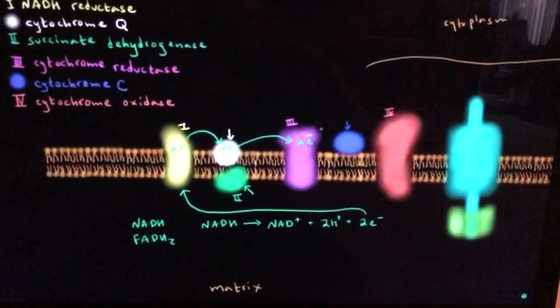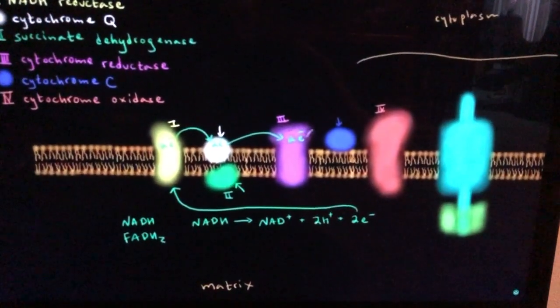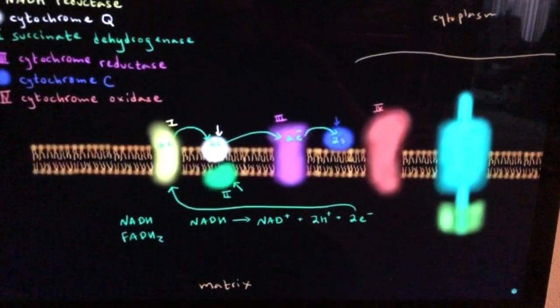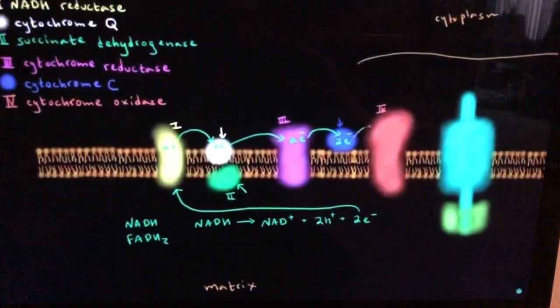So the 2 electrons are in enzyme 3. Then they go to cytochrome C. Then they go to enzyme 4.